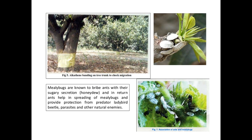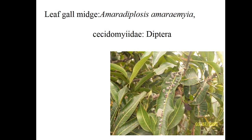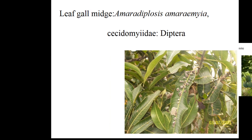Coming to leaf gall midge — Amradiplosis sp., family Cecidomyiidae, order Diptera. Eggs are laid on the underside of leaves; after hatching, maggots bore inside the leaf tissue and feed within, resulting in formation of small raised wart-like galls on leaves. Affected leaves get deformed and drop prematurely. Use dimethoate, phosphamidon, or monocrotophos for control.